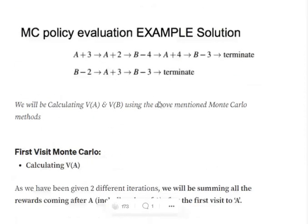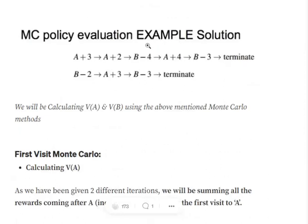Let's understand from an example. We have a problem statement with two given episodes. In Every Visit Monte Carlo, assume we are calculating the value function for state A. The first visit for A is here, so we calculate all the rewards from this point: 3, 2, minus 4, plus 4, minus 3. Now at the second occurrence, we encounter A again and take the summation from that point: 2, minus 4, plus 4, minus 3.